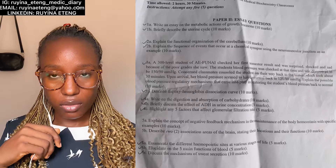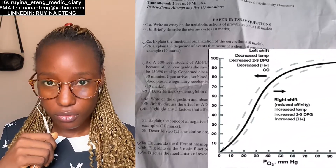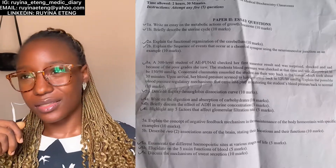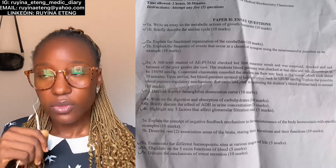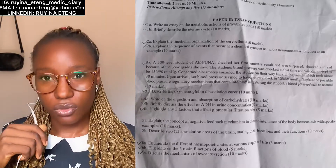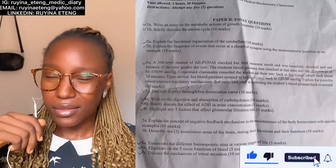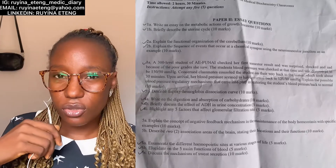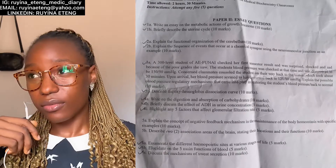Question 3b said: 'Describe the oxyhemoglobin dissociation curve.' For this question, you must draw the graph — there is a curve, you have to draw it. Write a slight introduction: sigmoid-shaped, and so on. Draw the curve, then write short notes under it describing the curve: it is a relationship between this and this.